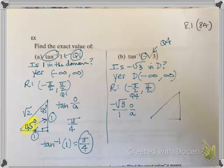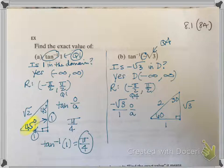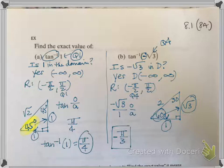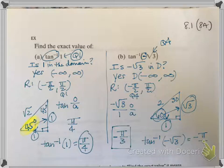The only triangle with a radical 3 is the 30-60-90 triangle. Looking at radical 3 over 1, opposite over adjacent — the only angle that works is 60 degrees. 60 degrees is pi over 3, but because this is a negative value I need to place it in quadrant 4, so I attach a negative sign. Therefore, inverse tangent of negative radical 3 equals the angle negative pi over 3.